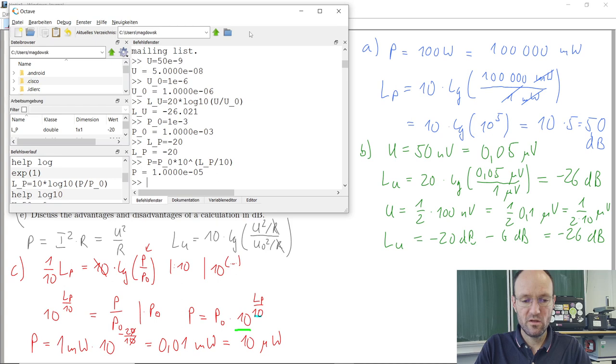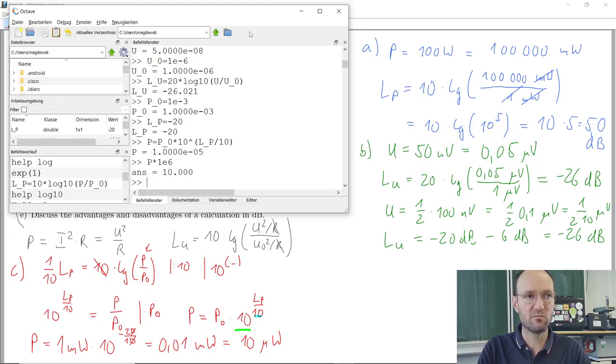And the power is the reference power multiplied with 10 to the power level divided by 10. And so we end up with this power. And if we want to have it in microwatt, we just take this power, multiply by 10 to the power of 6, because micro is 10 to the power of minus 6. So we get 10 microwatt, which nicely makes sense.